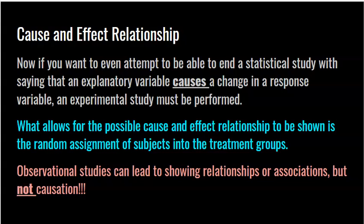The other thing we really want to do in an experiment is show a cause and effect relationship. You cannot do this in an observational study — there are way too many confounding variables. But if we truly do a good experiment, we can attempt to show that the explanatory variable can actually cause a change in the response variable. What allows for this is random assignment of subjects to treatment groups. Who gets what must be completely random — not the subjects' choice, not your choice. It's got to be up to randomness. As long as you have that, you can show causation.